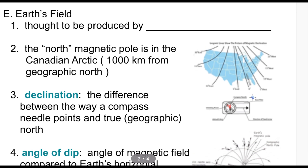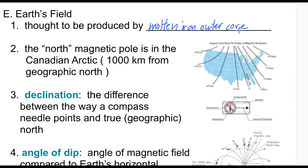The Earth has a magnetic field — we see pictures of this often. It is thought to be produced by the molten iron outer core. Because of the iron, the Earth acts as a giant magnet with its own magnetic field.